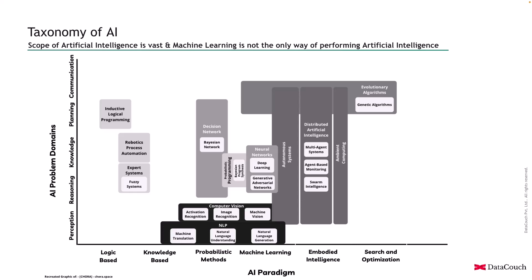Affective computing is a subfield that deals with emotions — their recognition, interpretation, and simulation. Then we have evolutionary algorithms, which look for optimal solutions, like genetic algorithms, applying search heuristics to choose the fittest candidate solution.